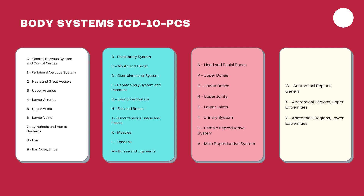If you look at them carefully, you'll see upper arteries, lower arteries, upper veins, lower veins, upper bones, lower bones, upper joints, lower joints — these are all unique to PCS. Anything above the diaphragm is considered upper, and anything below the diaphragm is considered lower.